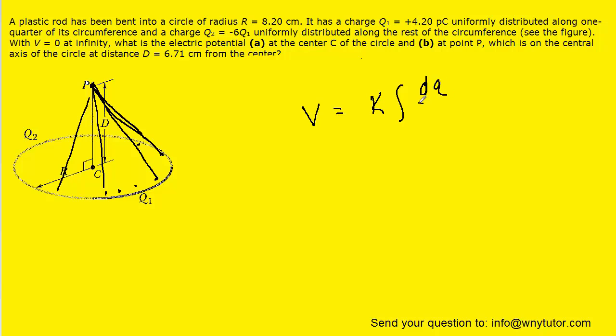we can once again factor out the r. So it's a very similar procedure. We have k over r times the integral of dq. As before, the integral of dq is just the total charge q.